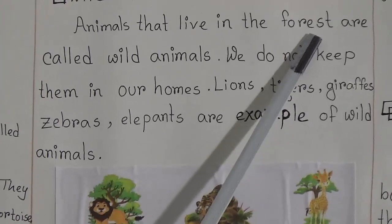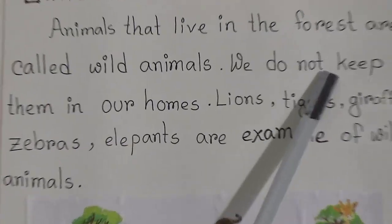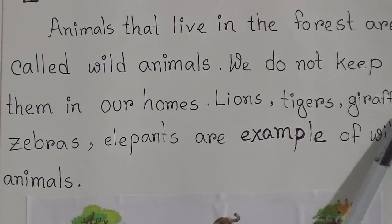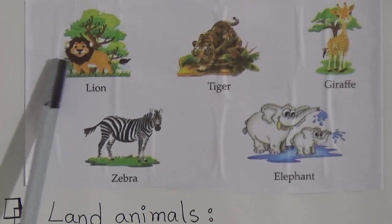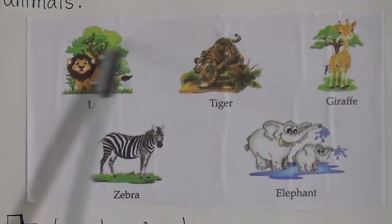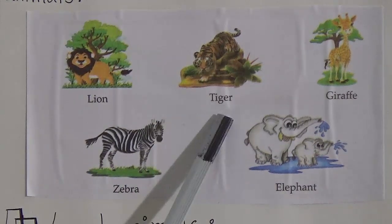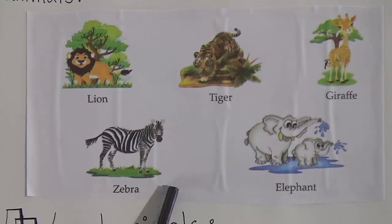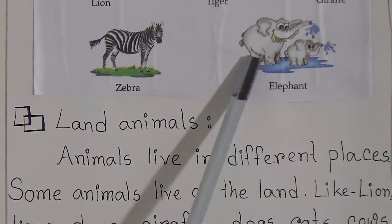Now let's go to the next topic: wild animals. Animals that live in the forest are called wild animals. We do not keep them in our homes. Lions, tigers, giraffes, zebras, and elephants are examples of wild animals. Look, students — this is a lion, this is a tiger, this is a giraffe, this is a zebra, and these are elephants.